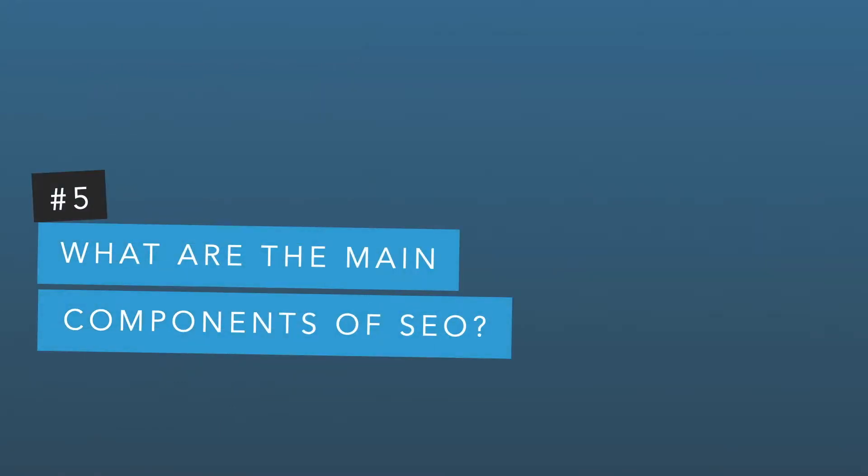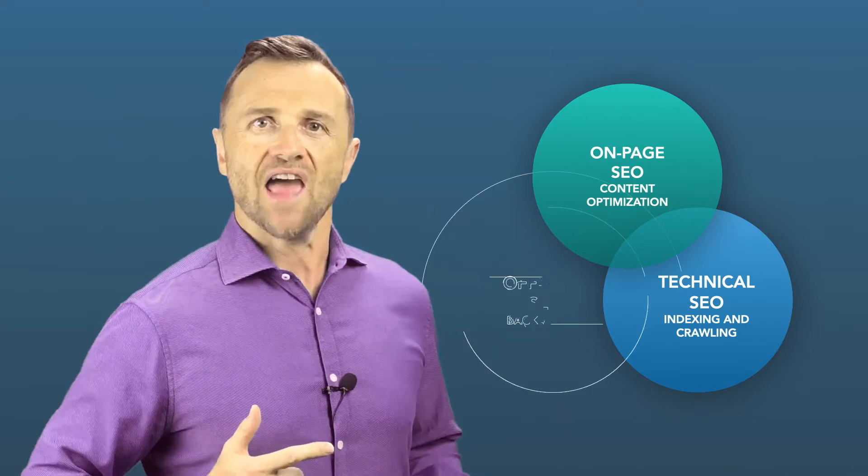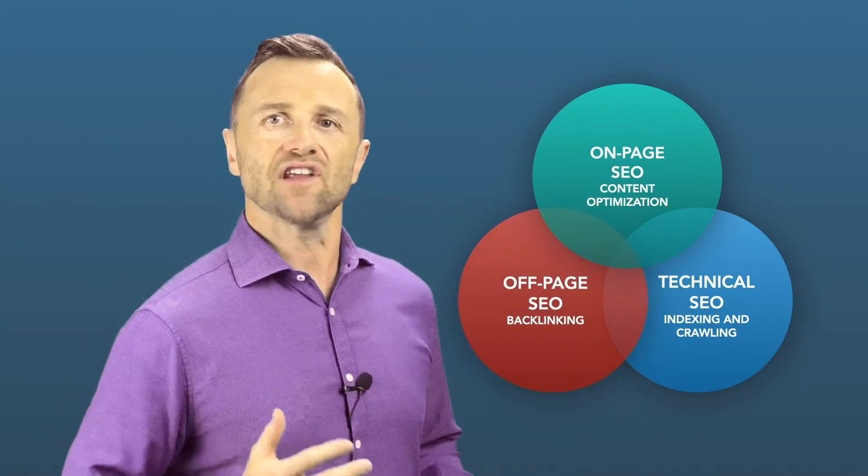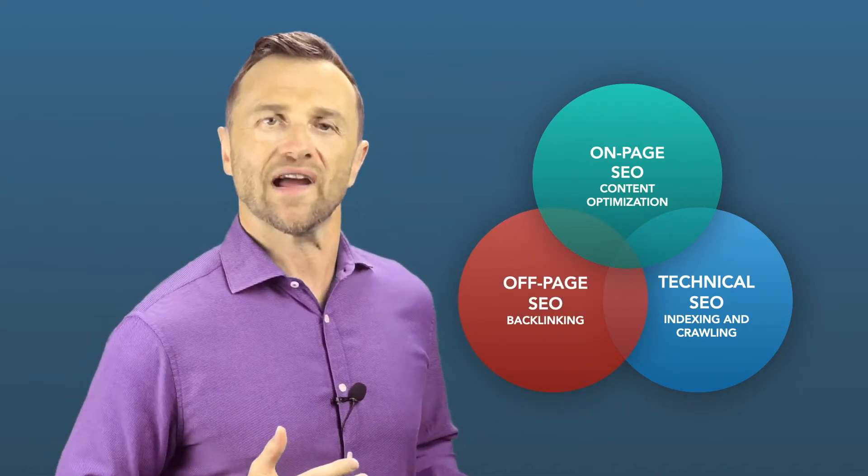So what are the main components of SEO? There are three main categories: On-page SEO, which concentrates on content optimization; Technical SEO, which helps with crawling and indexing; and Off-page SEO, which heavily focuses on backlinking.